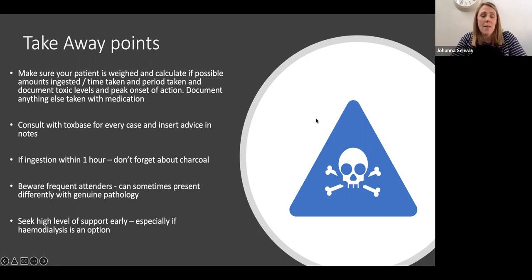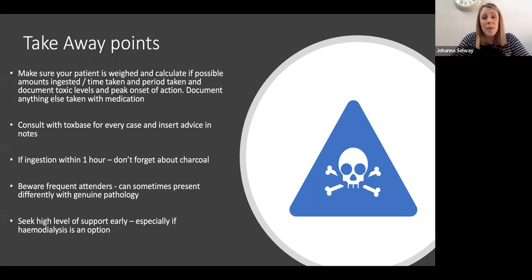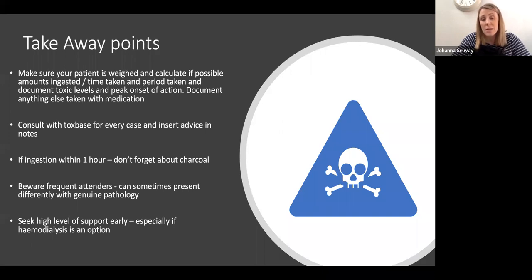The key takeaways: make sure your patient is weighed and calculate the amounts taken, the time taken, and over what period it's been taken, so you can document the toxic levels and when peak onset is going to occur. Document anything else taken with it. Consult Toxbase for every case and put the Toxbase advice in the notes — these are updated regularly. Don't forget charcoal if within the hour, or check if repeated doses can be given. Beware of frequent attenders — they often present similarly, but can present differently, so address every case on its own merits. Seek high-level support early from ITU colleagues, especially if haemodialysis is an option for significant toxic overdose.